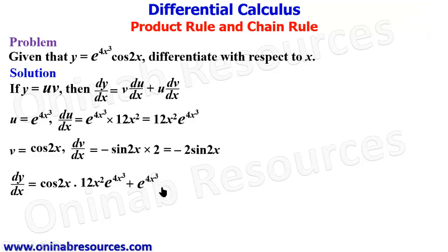Then our dv/dx is negative 2 sine 2x. This is going to give us 12x² cos 2x e raised to power 4x³, then here is minus, negative 2 sine 2x e raised to power 4x³.